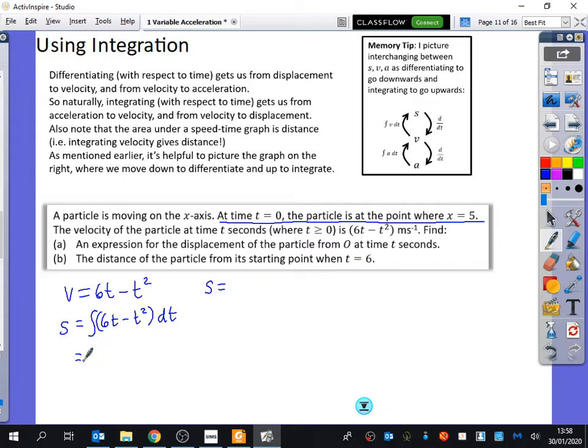So s is the integral of 6t minus t squared with respect to time. You could dive straight in and just integrate this. You don't have to use the integration symbol, but it's nice to show the examiner you understand what you're doing. When I integrate this, what does 6t minus t squared integrate to? 3t squared minus a third t cubed plus c.